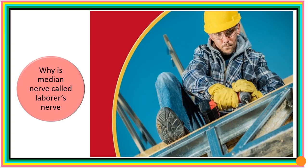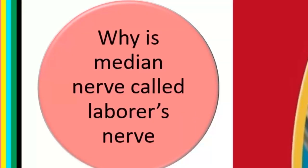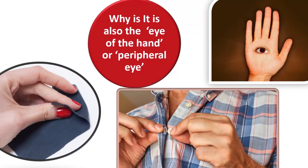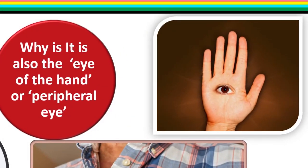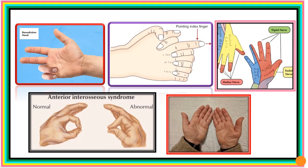One of the interesting parts of our lecture today will be our ability to answer these questions: why is the median nerve called the laborious nerve, and why is it also called the eye of the hand or the peripheral eye? By the end of today's lecture, we will understand why, when a patient with median nerve injuries wants to make a fist in the affected hand, we will see a picture like this.